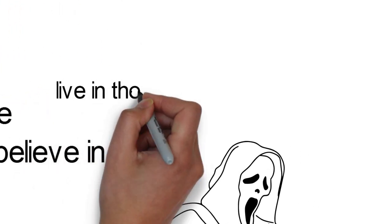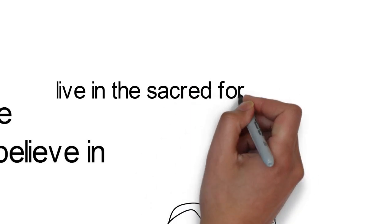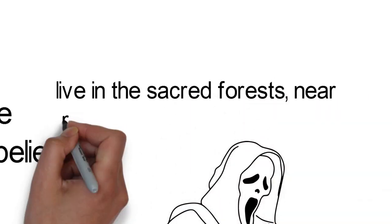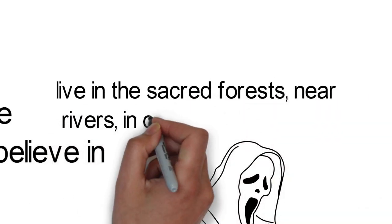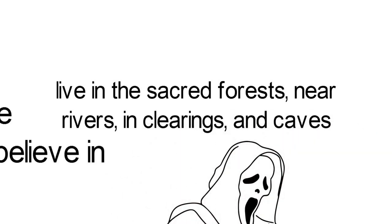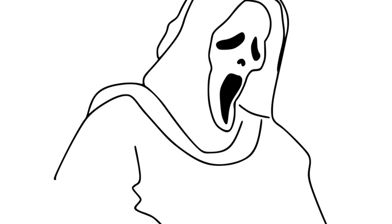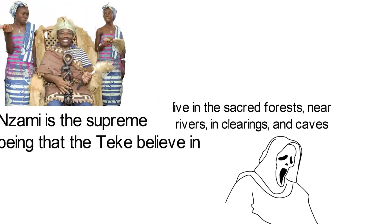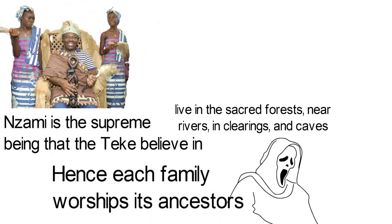The cult of the ancestors is very important among the Teke. The ancestors are believed to live in the sacred forest, near rivers, in clearings, and caves. If the descendants do not honor and pay obeisance to their ancestors, they believe that they will come back to torment them, be it with sickness or mental illness. Hence each family worships its ancestors.